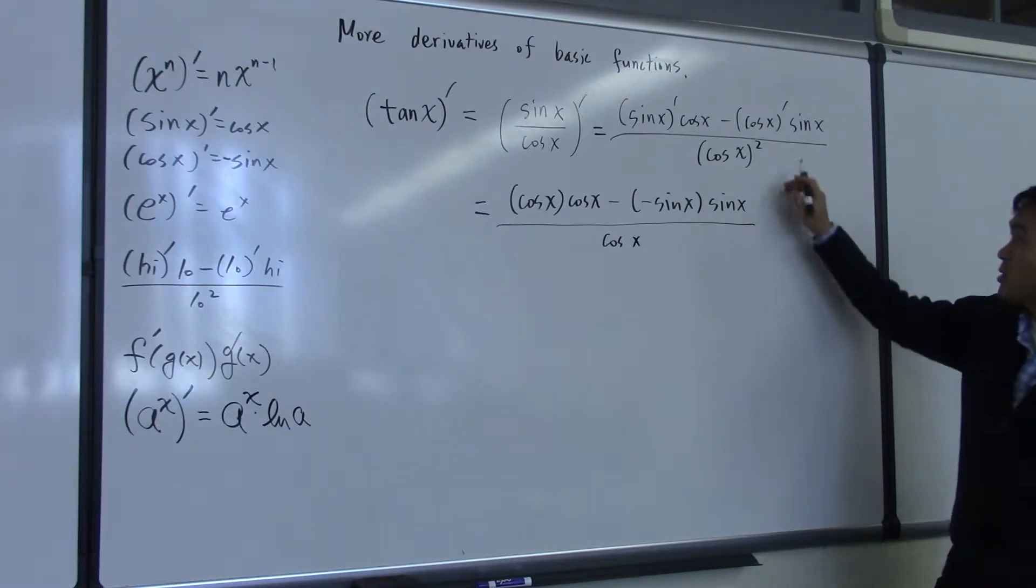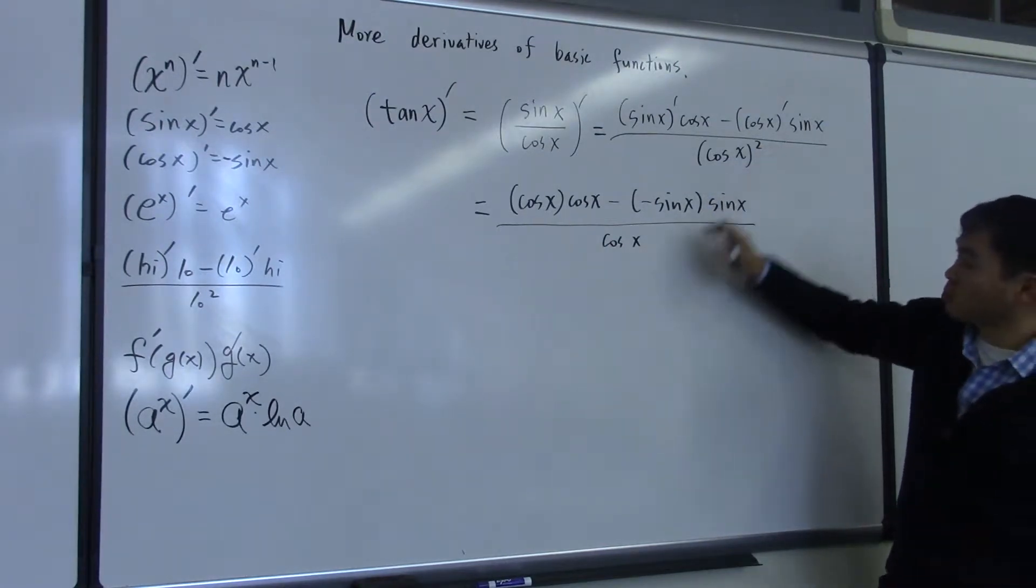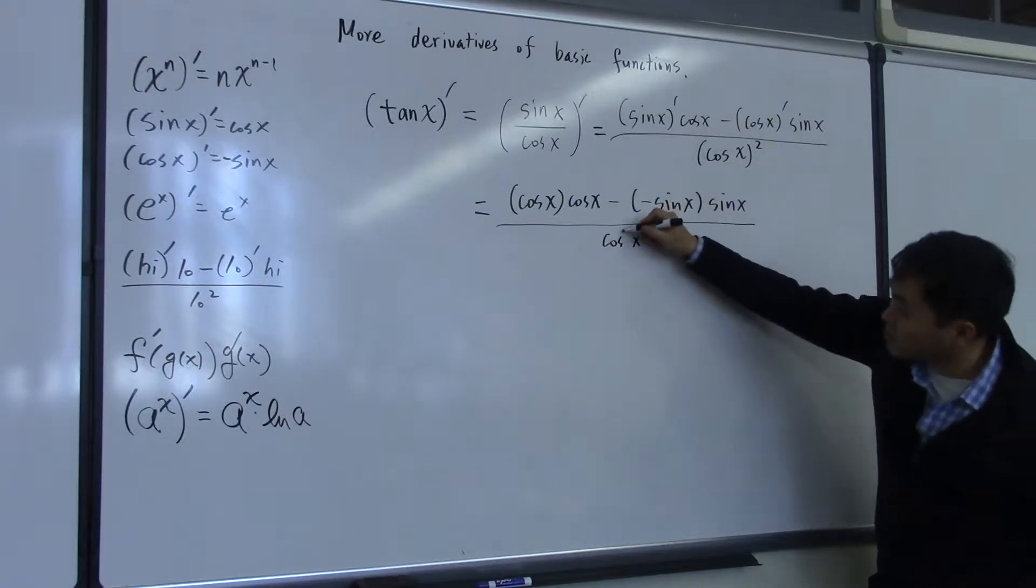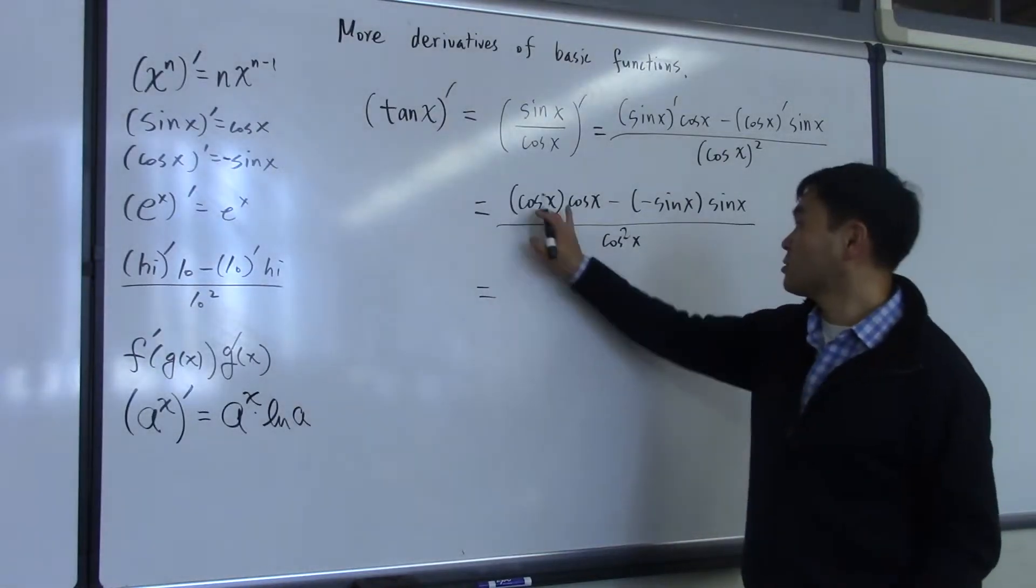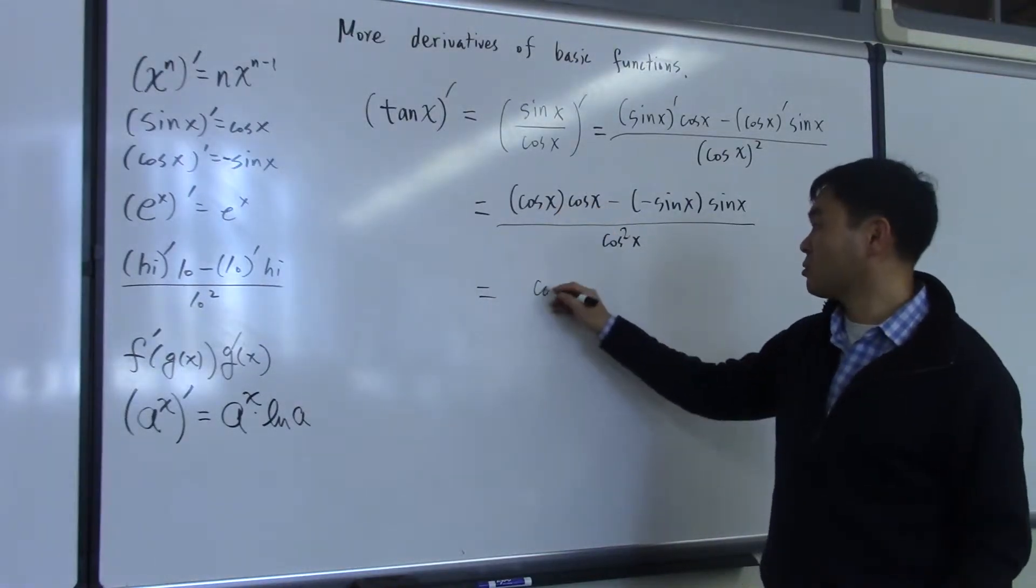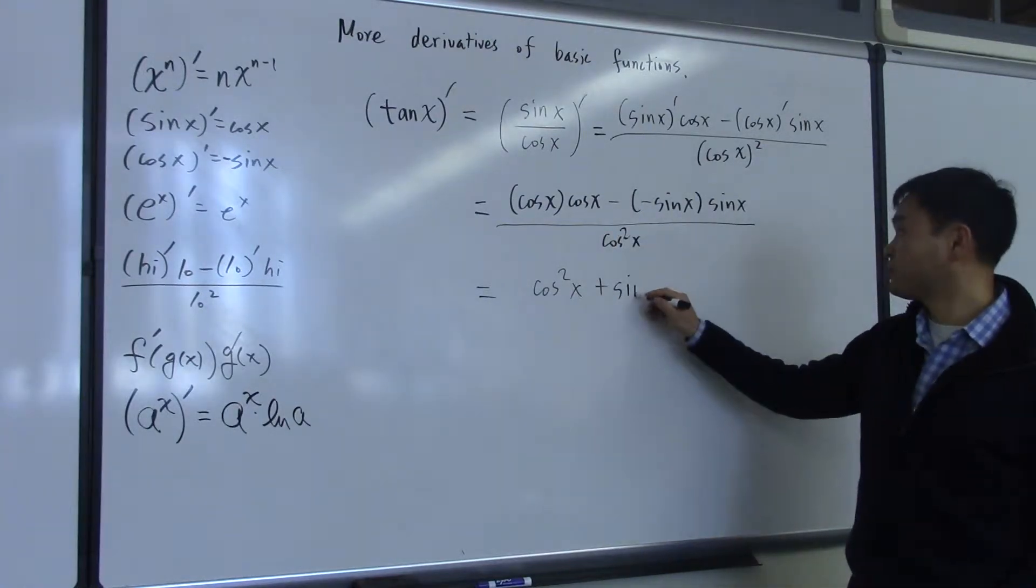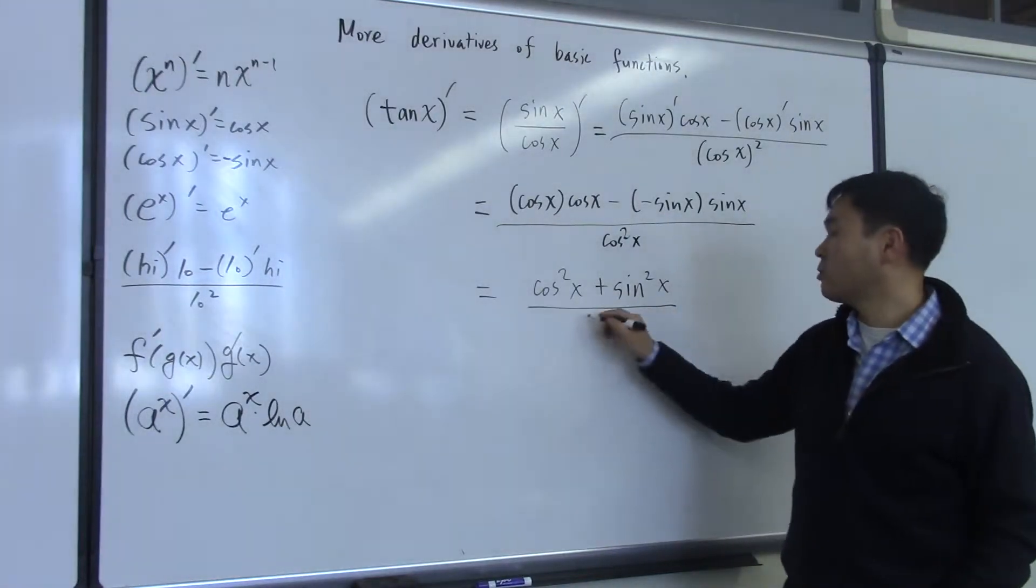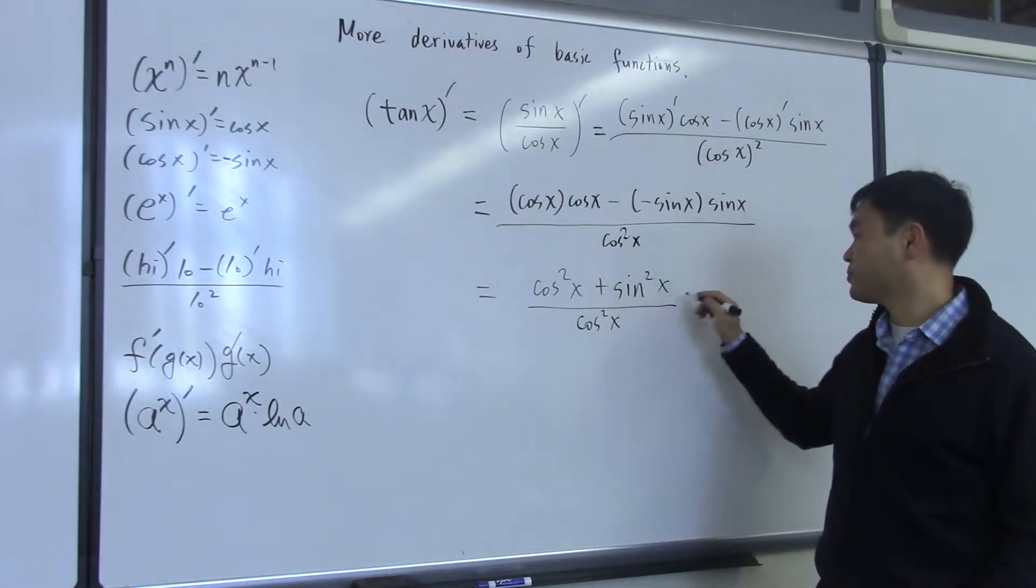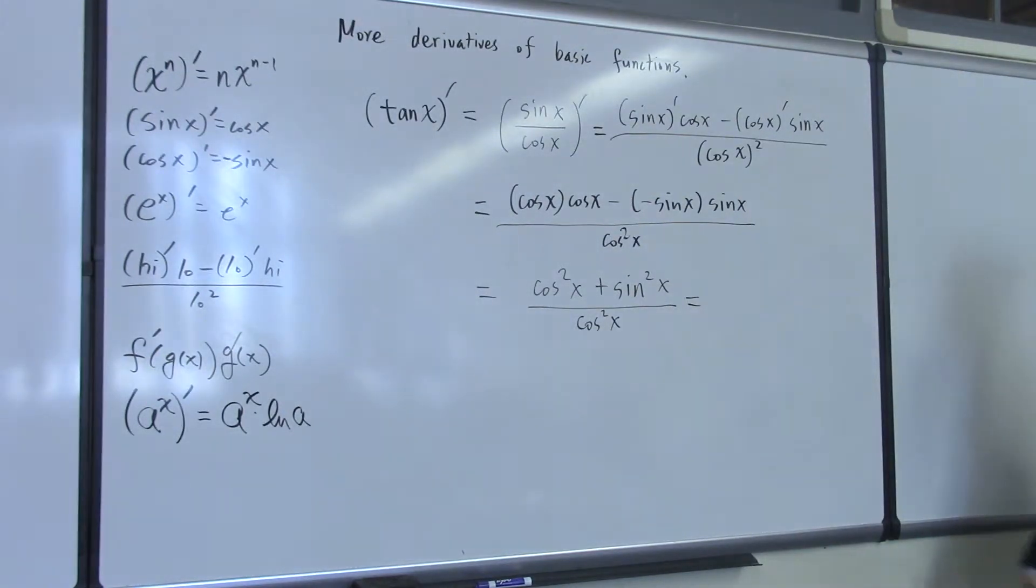You should all know that if you have cosine squared, people just write the 2, not with the parentheses, but they just put 2 here. Okay? So that's another common way people write it. So cosine times cosine is cosine squared. Minus minus is plus. Sine times sine is sine squared over cosine squared. What's cosine squared plus sine squared? One.